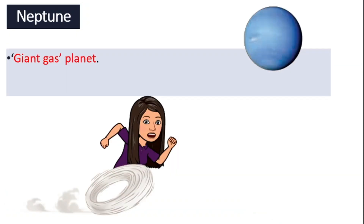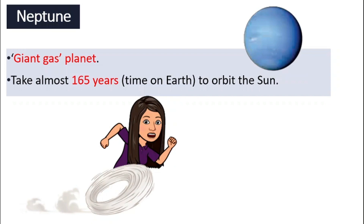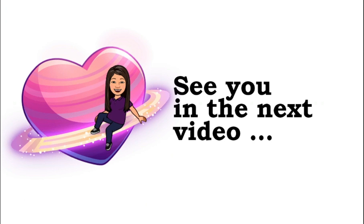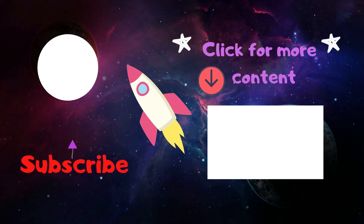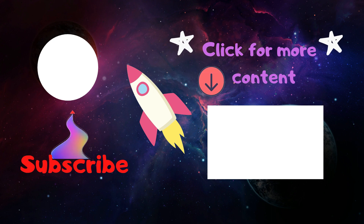The last planet is Neptune. It is also a giant gas planet, and it takes Neptune even longer to go around the Sun for one whole orbit — 165 years. That is our short — well, quite a long — trip from Mercury all the way to Neptune. I will see you in the next video. If you have learned something new from this video, don't forget to like and subscribe.